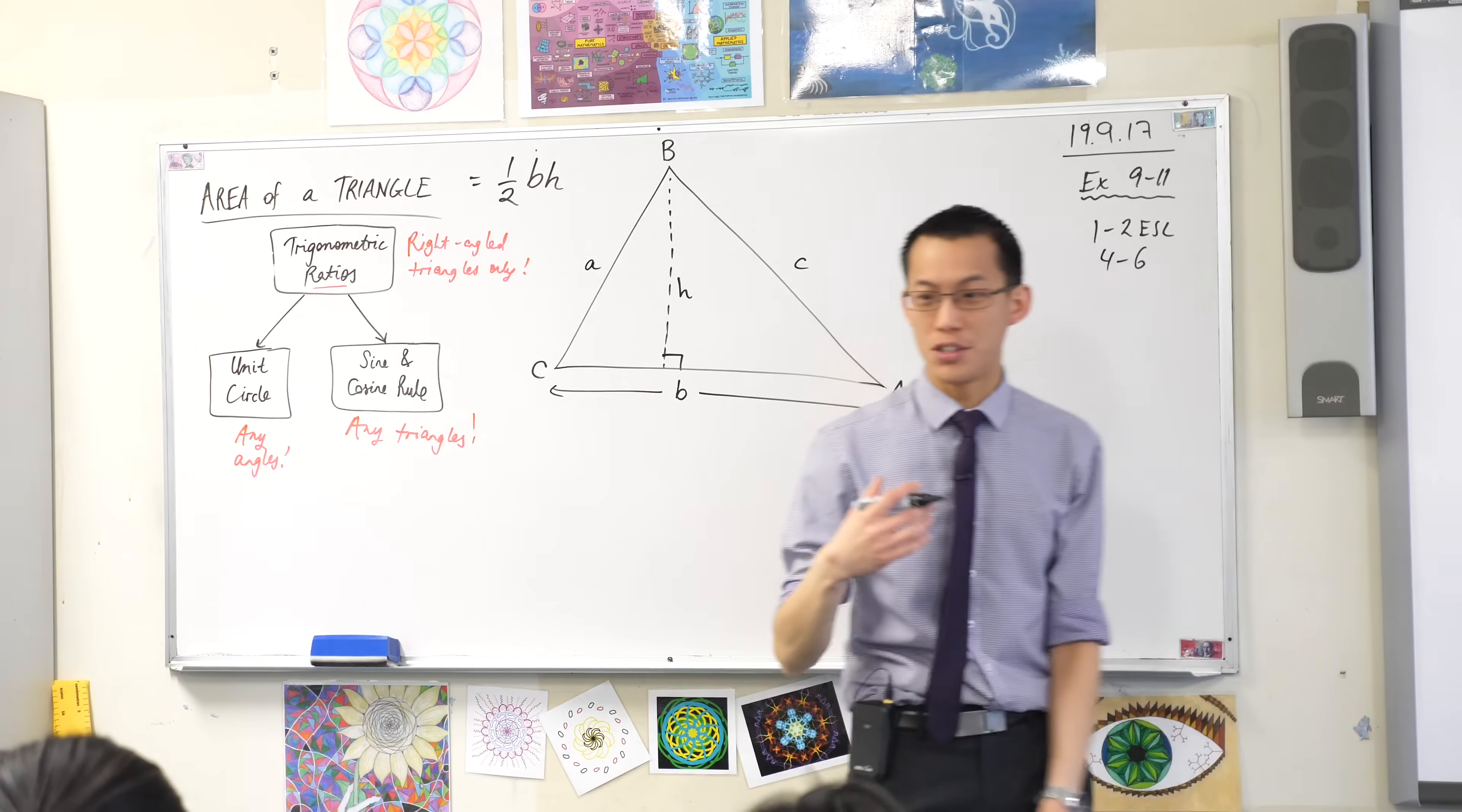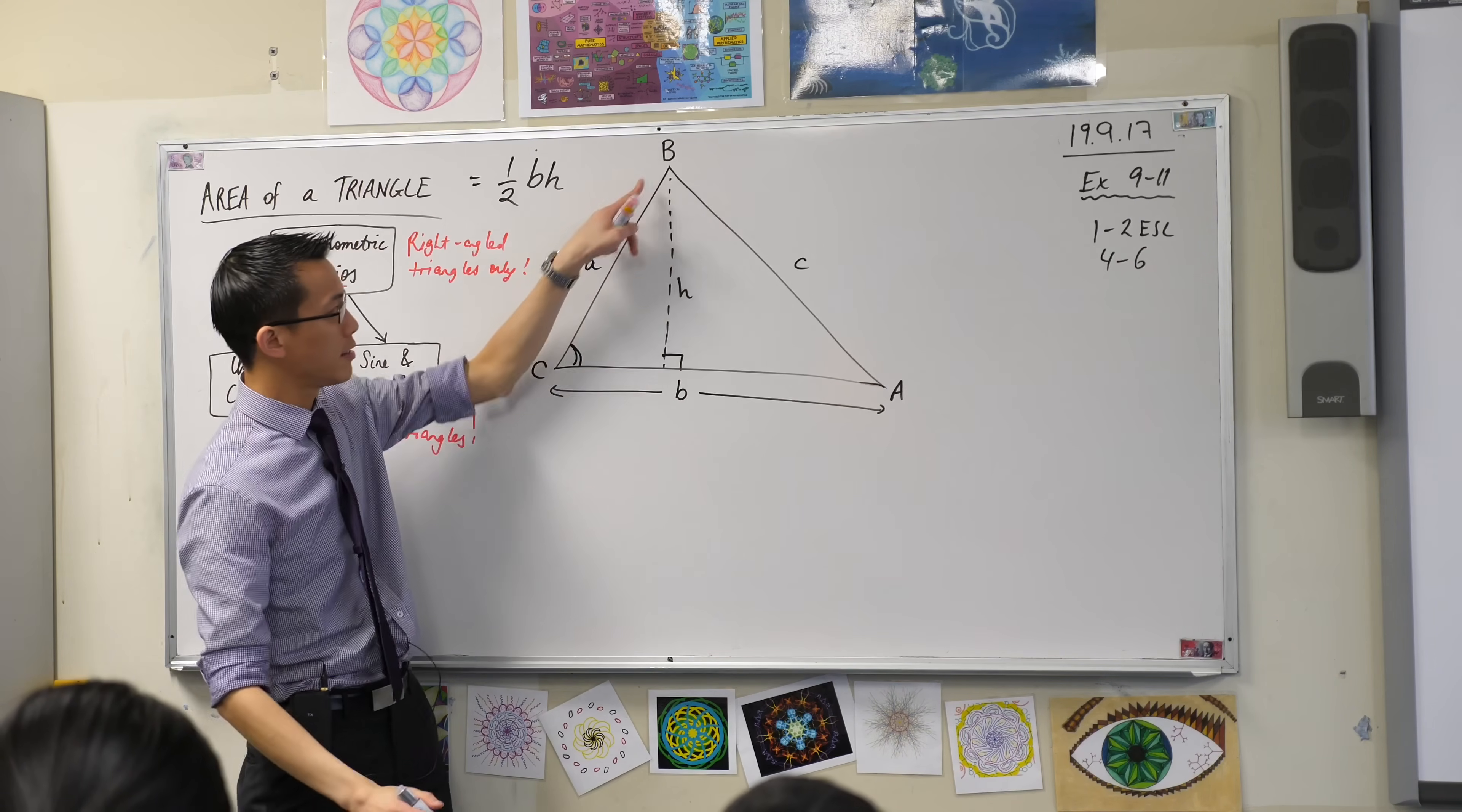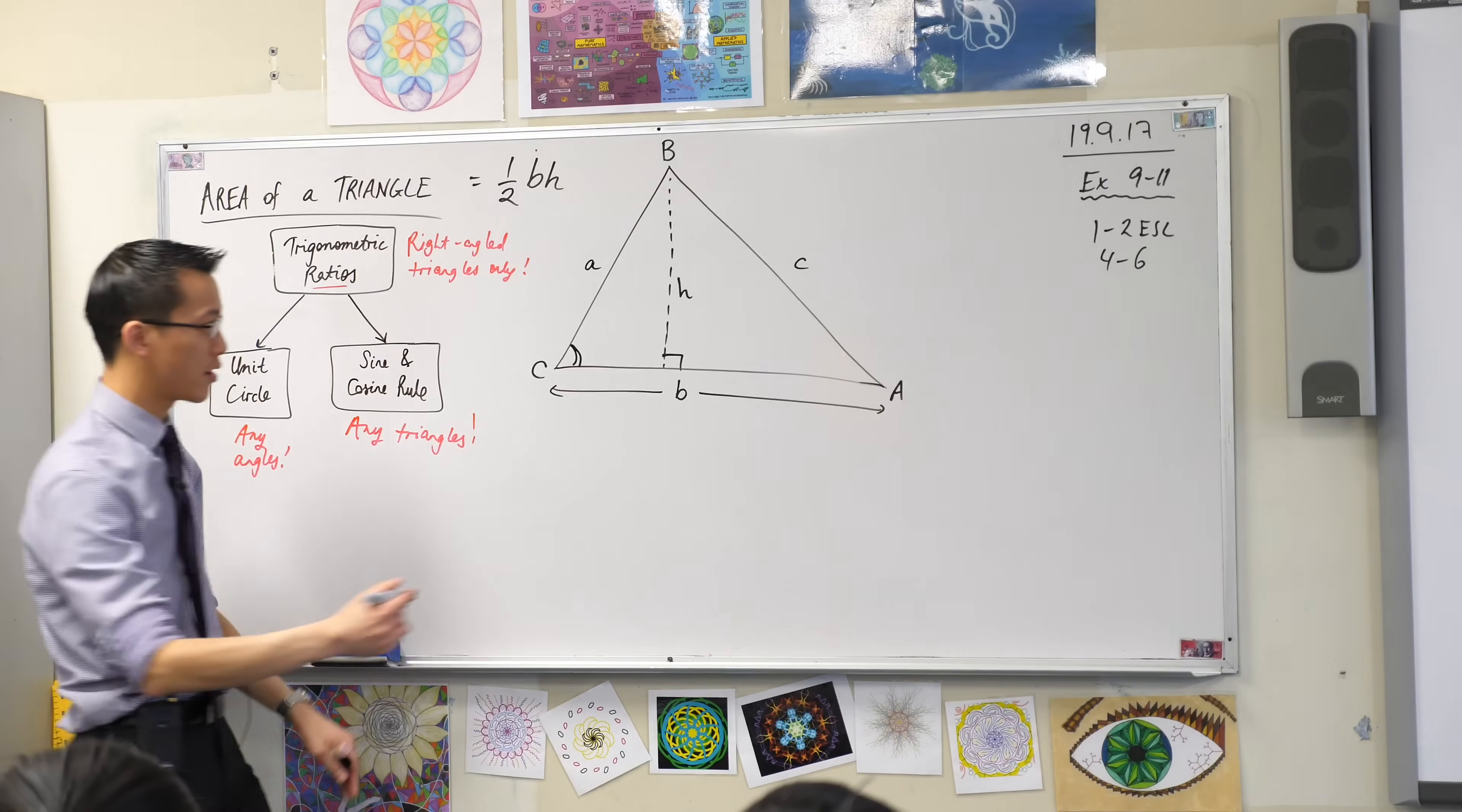Now I'm going to do a trick here that's related to how we got the sine rule. If you have a look at this angle here, in this little triangle on the left hand side, I can use some trig here to find out what H is in terms of other lengths. For example,